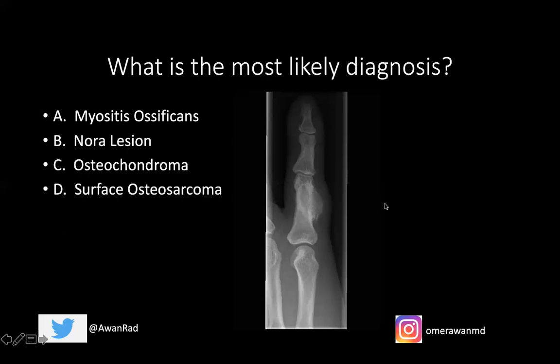So the best answer in this case would be a Nora lesion, also known as a bizarre BPOP or bizarre parosteal osteochondromatous proliferation. This is a disordered mass that comprises bone, cartilage, and fibrous tissue.